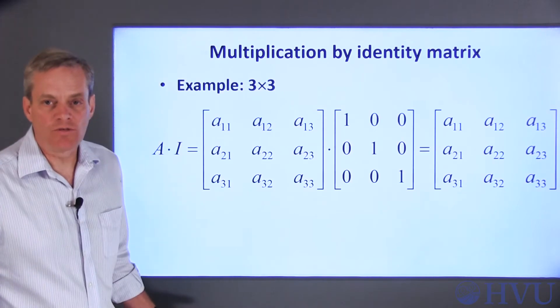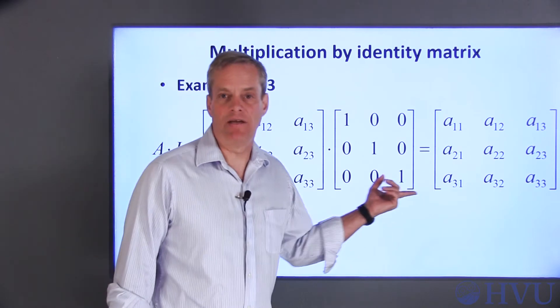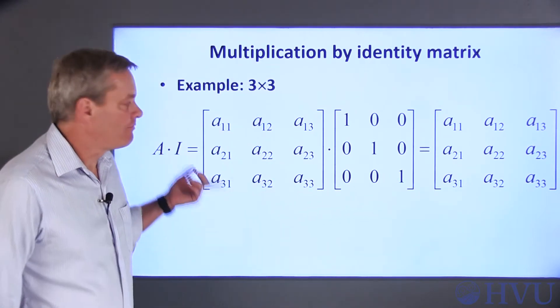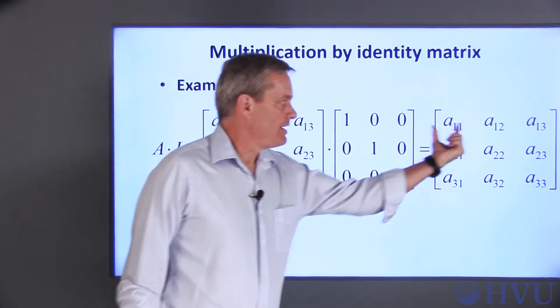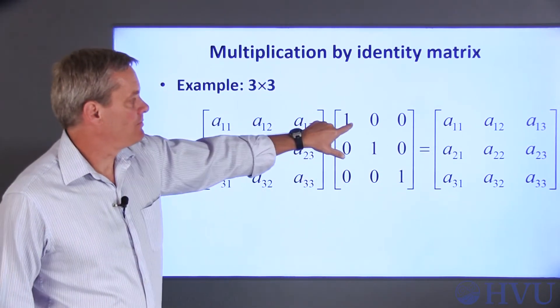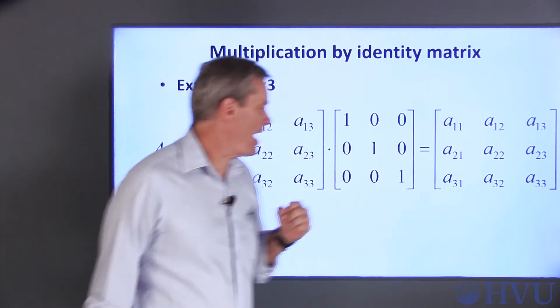To show how this works, I'll look at multiplication of an arbitrary 3 by 3 matrix by an identity matrix. So, for example, the first row times the first column is this term, so A11 times 1, 0 times A12, plus 0 times A13 recovers that term back.